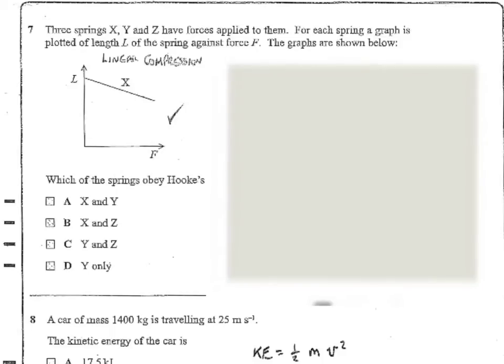Question 7. Three springs X, Y and Z have forces applied to them. For each spring a graph is plotted of length L of the spring against force F. The graphs are shown below. So we have here in the first one the length L getting smaller. So this is some kind of linear behavior and it's being compressed. So we can call that like linear compression. So because it is linear we can say that it does seem to be obeying Hooke's Law.